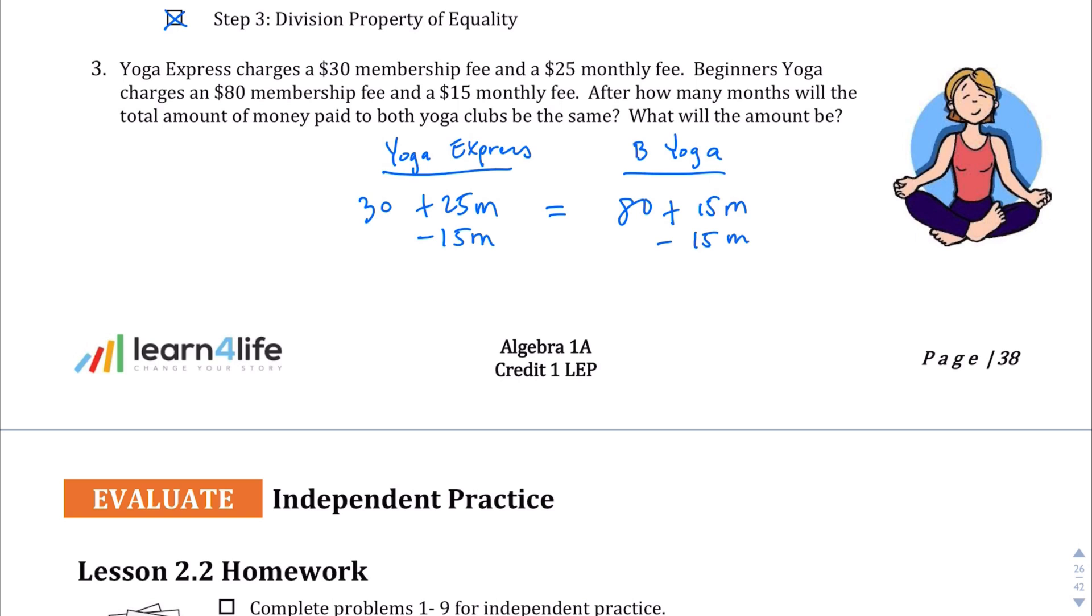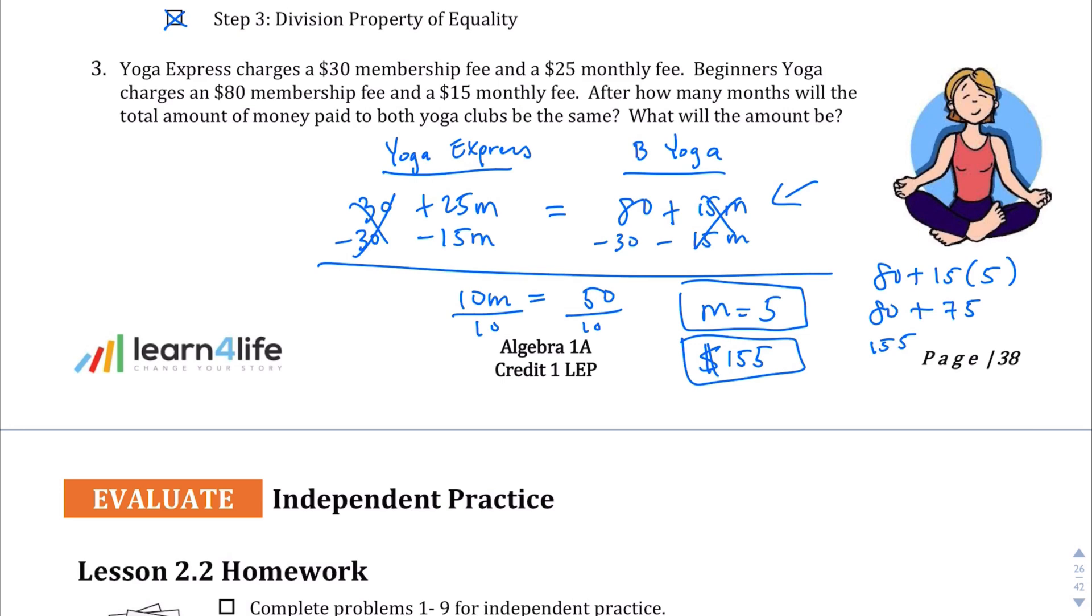Let's move the smaller one. I'm going to subtract 15M from both sides, and I'm going to simultaneously move these over so all my variables are on one side and my constants are on the other side. 25 minus 15 is 10M equals 80 minus 30, which is 50. I'm going to divide both sides by 10. I'm left with M equals 5. So the answer is both yoga clubs will be at the same amount of money paid after 5 months. But what will that amount be? Let's plug it into Beginners Yoga. We're going to plug in 5 for M, so 80 plus 15 times 5 is 75. When we add that together, we get $155. So the amount of money that gets paid at both places after 5 months is $155.